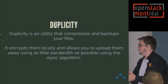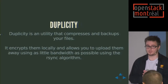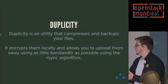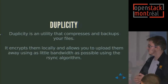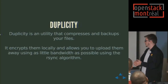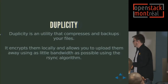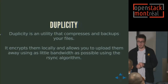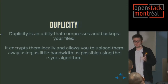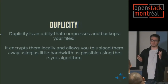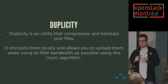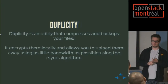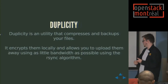So let's talk about backups. The first tool that allows you to manage backups is Duplicity. Duplicity is a utility that compresses and backs up your files, encrypts them locally, and allows you to upload them using as little bandwidth as possible via the rsync algorithm. Duplicity is a generic backup tool — you can backup to files, FTP, SCP, but there's also the Swift backend, which is what's interesting for us right now.